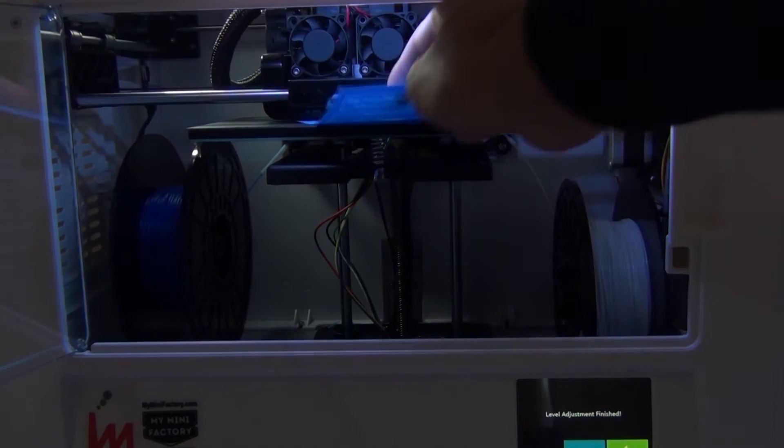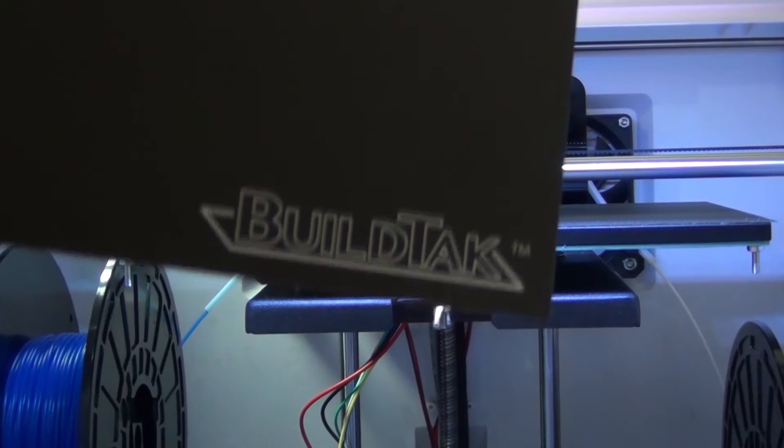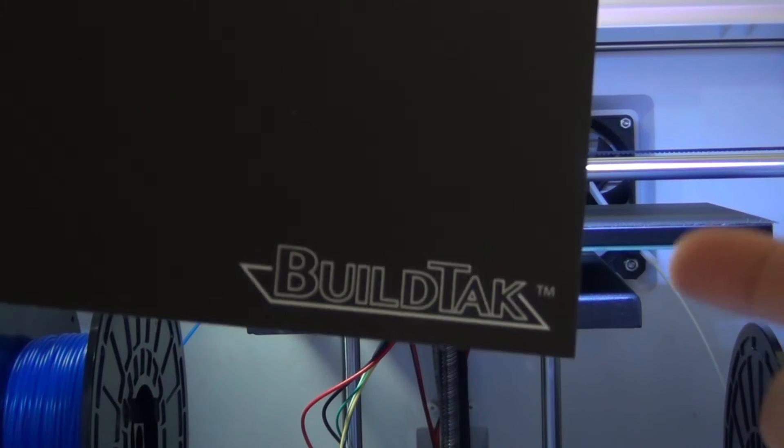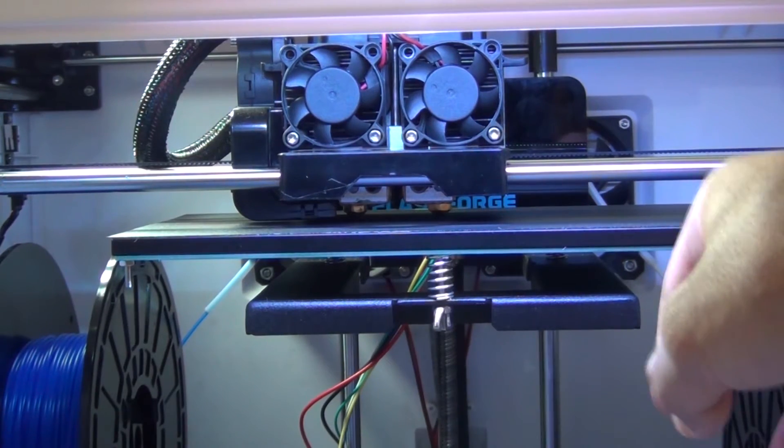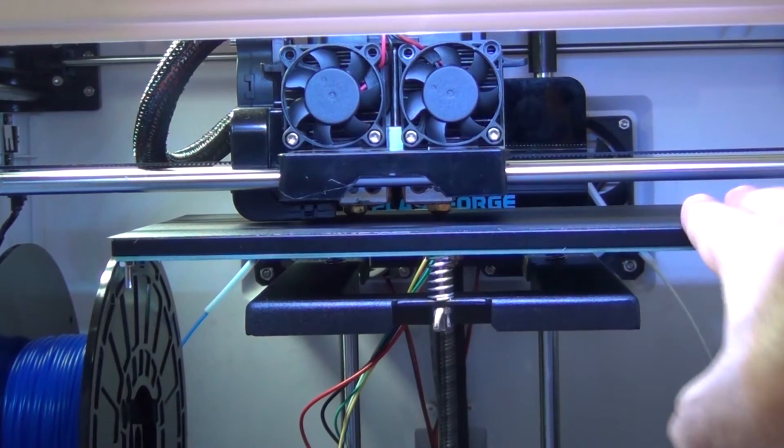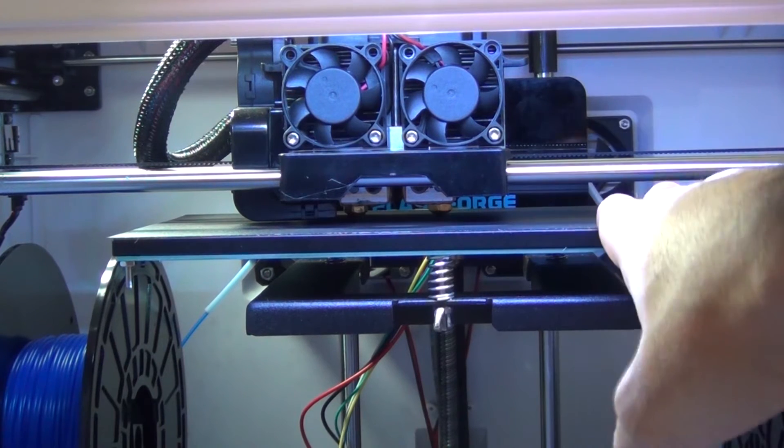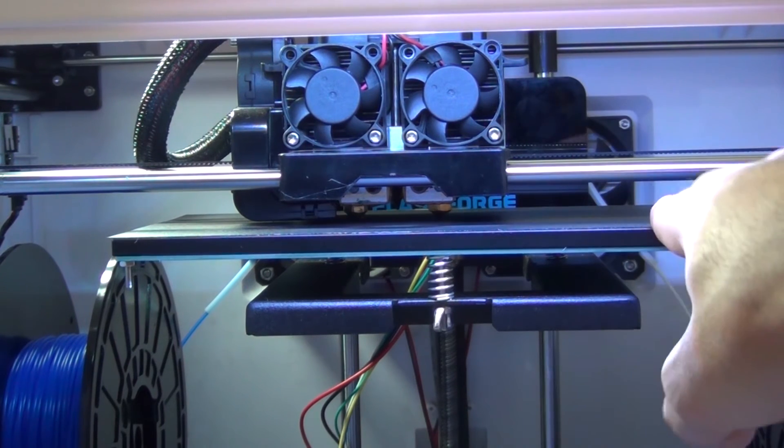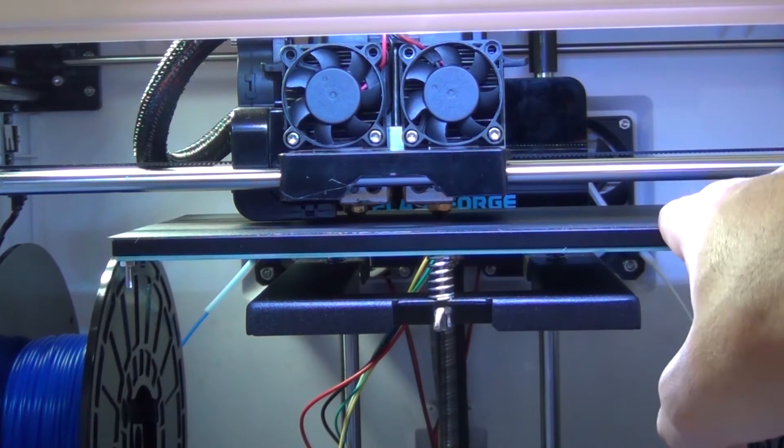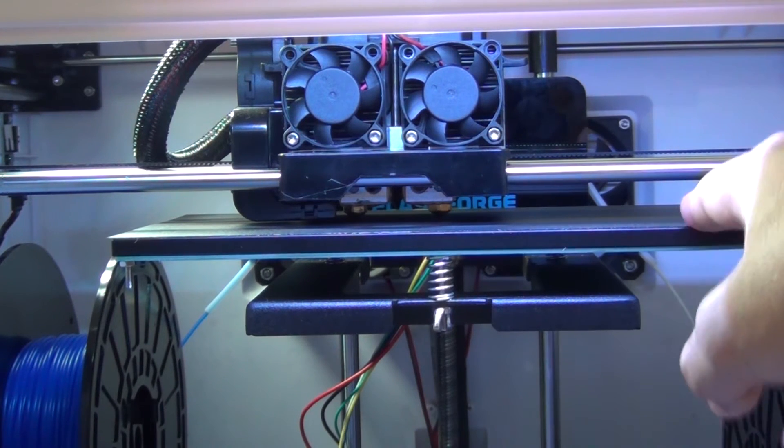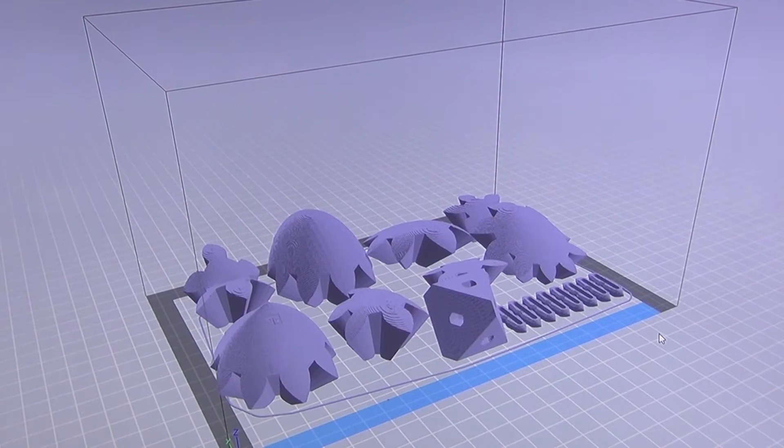So there you go, so that's now all done. We've now fitted the BuildTak printing surface onto the Flashforge Dreamer and it was very very easy. It prints up to 125 degrees, so just make sure you don't make the print bed any hotter than 125 degrees, but apart from that it's that simple.